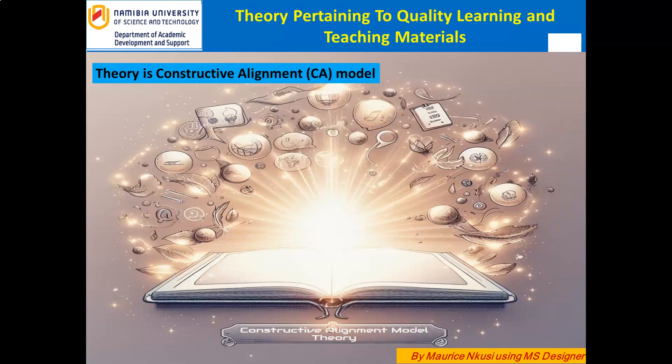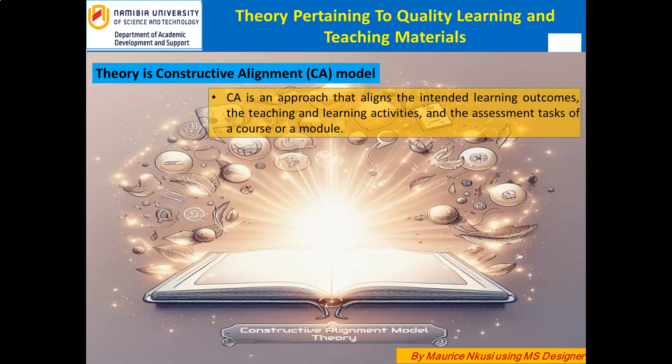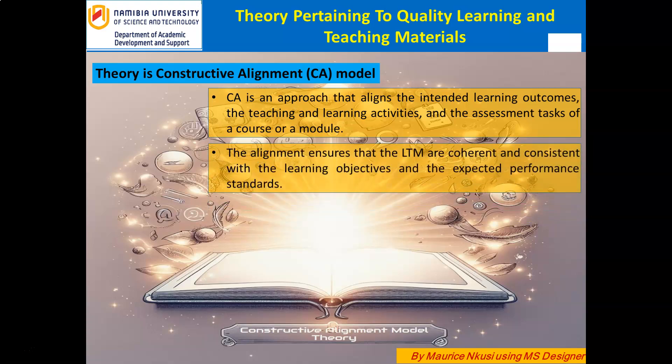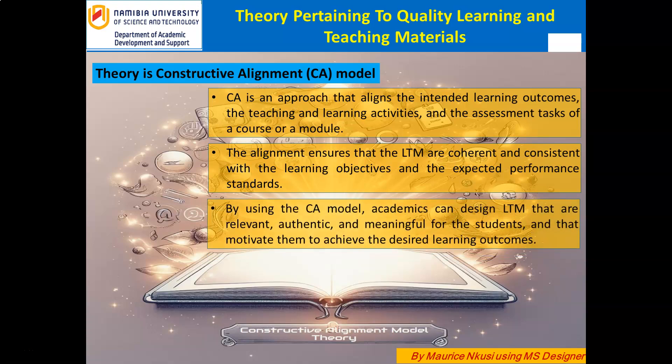The second theory is Constructive Alignment, CA Model. CA is an approach that aligns the intended learning outcomes, the teaching and learning activities, and the assessment tasks of a course or a module. The alignment ensures that the LTM are coherent and consistent with the learning objectives and the expected performance standards. CA also emphasizes the active involvement of students in constructing their own knowledge and skills through engaging and challenging LTM, according to Biggs and Tang, 2011. By using the CA model, academics can design LTM that are relevant, authentic, and meaningful for the students, and that motivate them to achieve the desired learning outcomes. CA also supports learner autonomy, self-regulation, and metacognition.